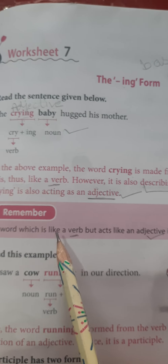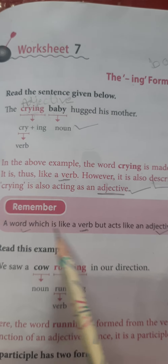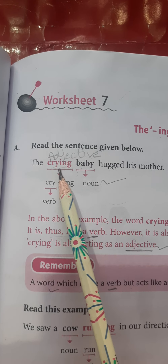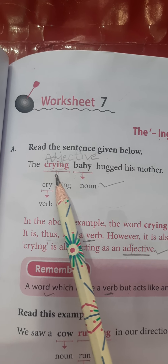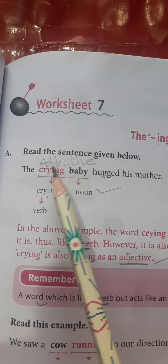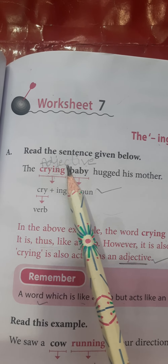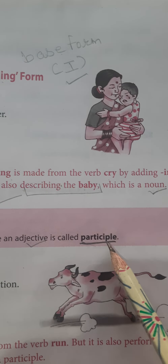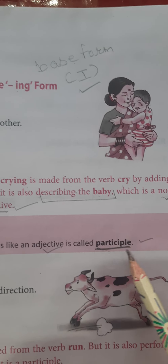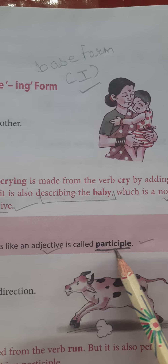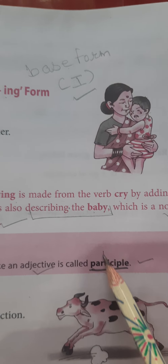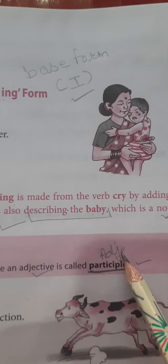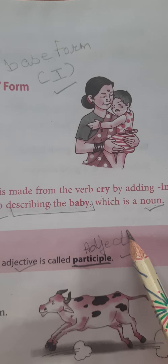Always remember, students: jo bhi word verb ki tarah hai but whose function is like an adjective — it functions as an adjective — it is called a participle. So it means that participle works as an adjective.